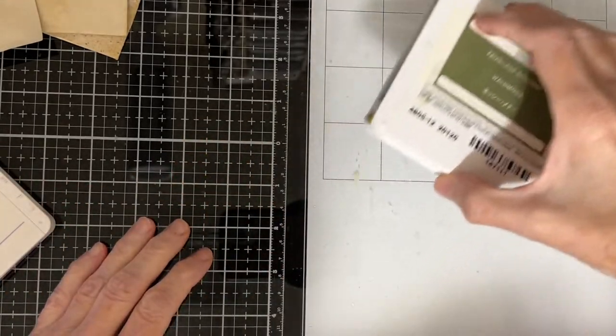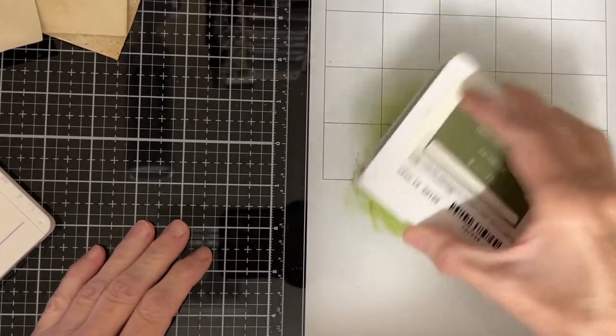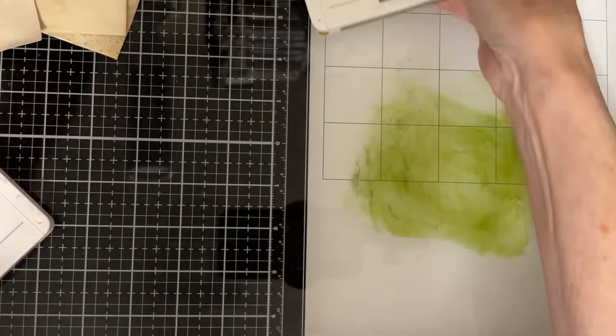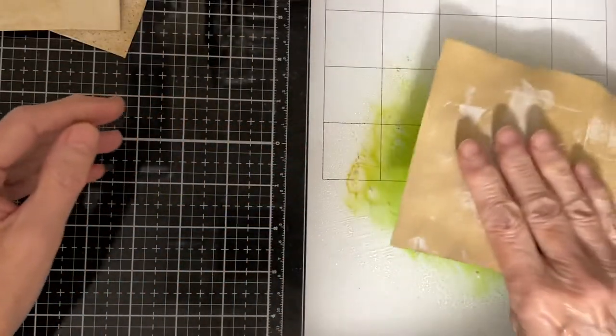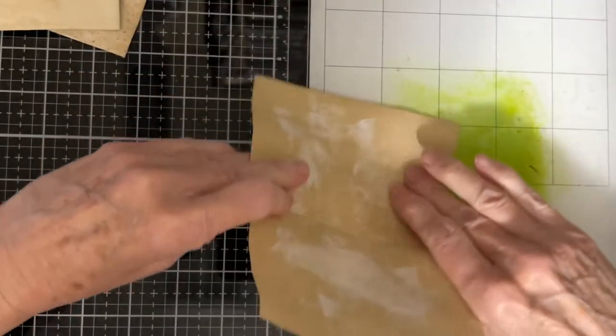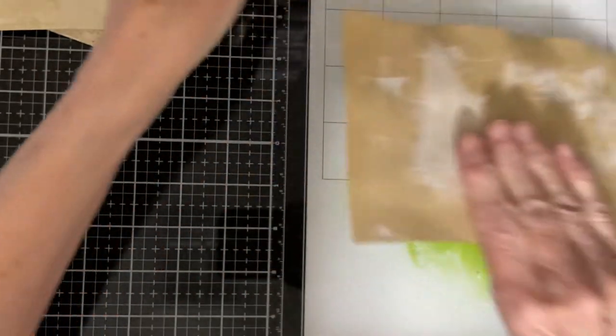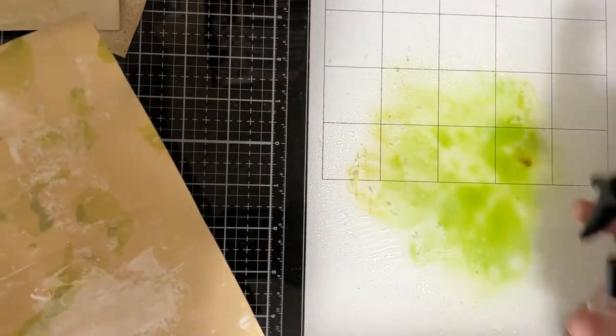So now that my envelopes have dried, I want to add a little color to them. So I'm taking this Mossy Meadow ink pad. It's a Stampin' Up color. And I'm going to spray just a little bit of water. And then I'm going to take my papers and just kind of dab them in there just to pick up a little bit of that ink. Maybe a little bit more water so it spreads out.